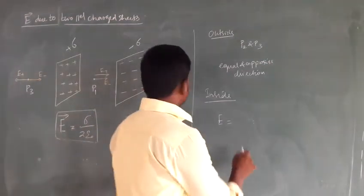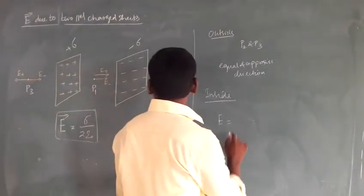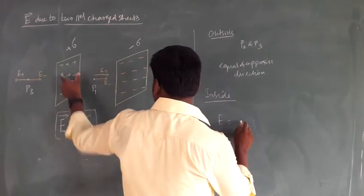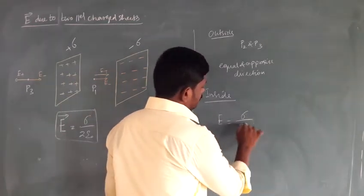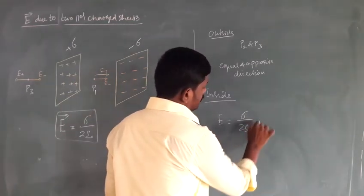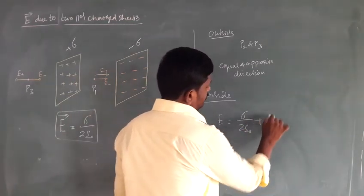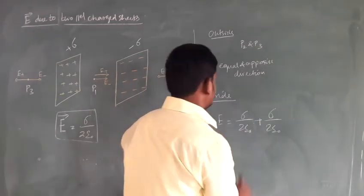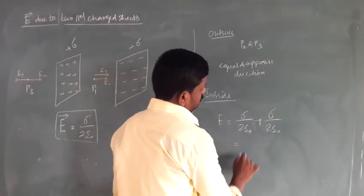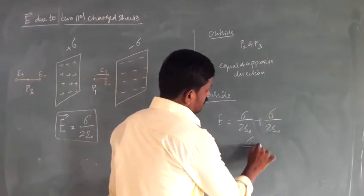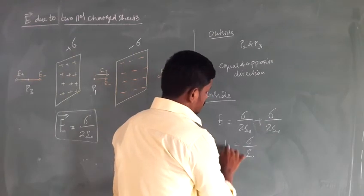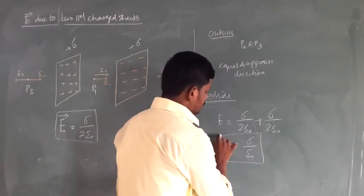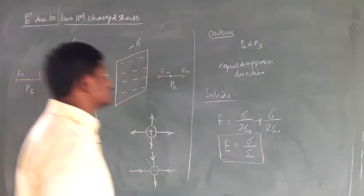At point P1, E plus and E minus are in the same direction. Electric field due to one plate is sigma by 2 epsilon naught, plus sigma by 2 epsilon naught. That is equal to sigma by epsilon naught. So the electric field E equals sigma by epsilon naught, where sigma is the surface charge density.